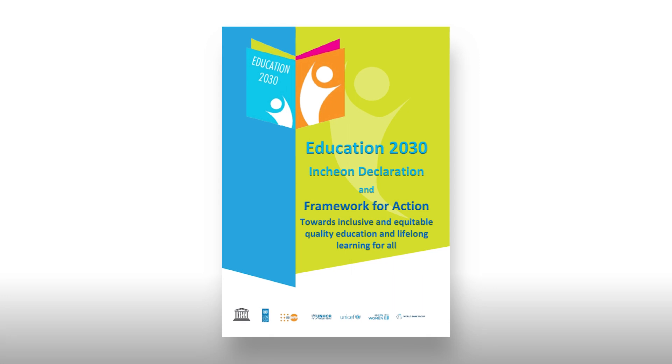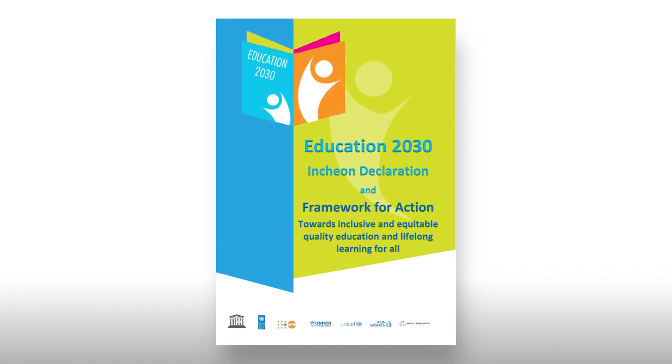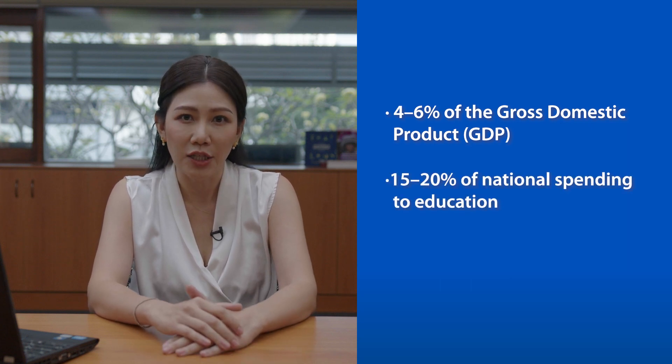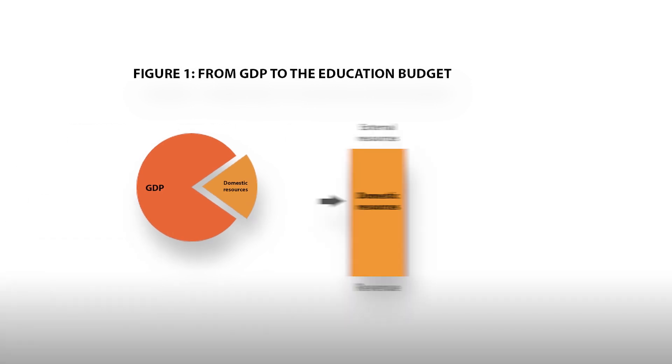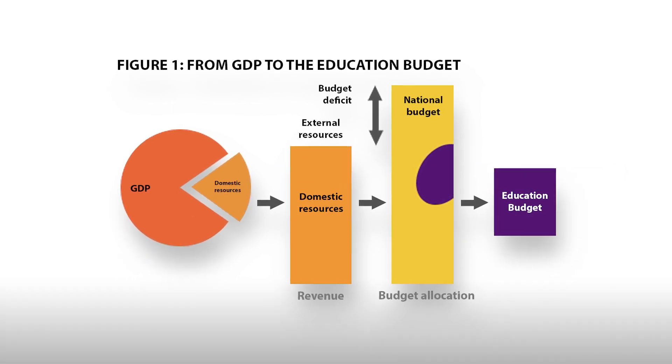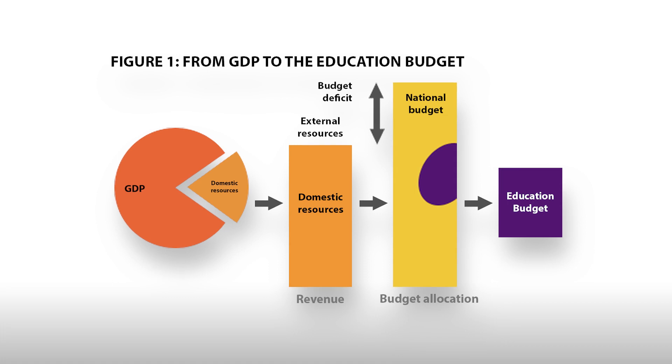At the global level, the implementation of SDG 4, as reflected in the Incheon Declaration, refers to budgeting and financing again and again in order to ensure inclusion and equity. First, it reinforces that countries should allocate 4 to 6% of the gross domestic product (GDP) or 15 to 20% of national spending to education. Secondly, it emphasizes how important it is for countries to revise budget and resource allocation to make sure that target-specific groups or areas of education that need more attention ensure inclusion and equity as they implement each of the targets of SDG 4.